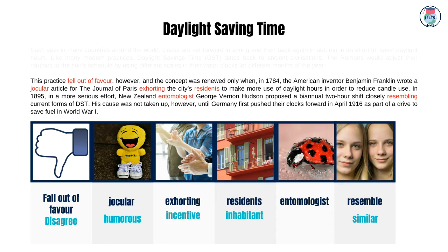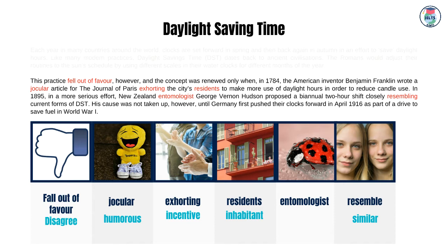This practice fell out of favor, however, and the concept was renewed only when, in 1784, the American inventor Benjamin Franklin wrote a jocular article for the Journal of Paris exhorting the city's residents to make more use of daylight hours in order to reduce candle use. In 1895, in a more serious effort, New Zealand entomologist George Vernon Hudson proposed a biannual two-hour shift closely resembling current forms of DST. His cause was not taken up, however, until Germany first pushed their clocks forward in April 1916 as part of a drive to save fuel in World War I.